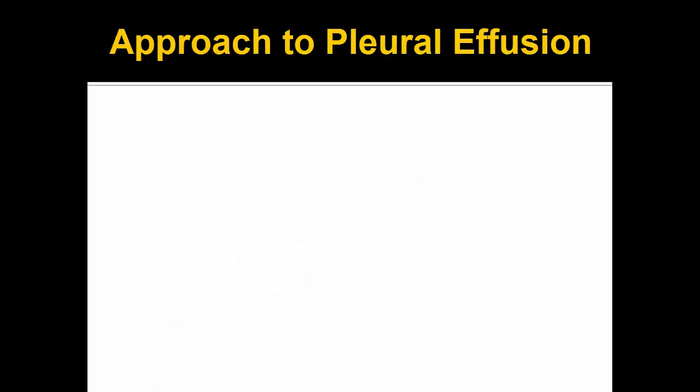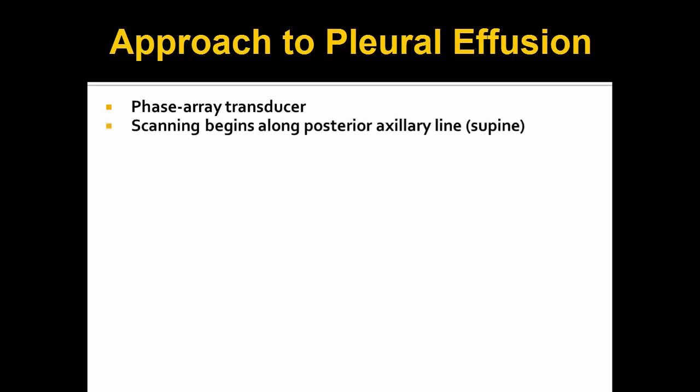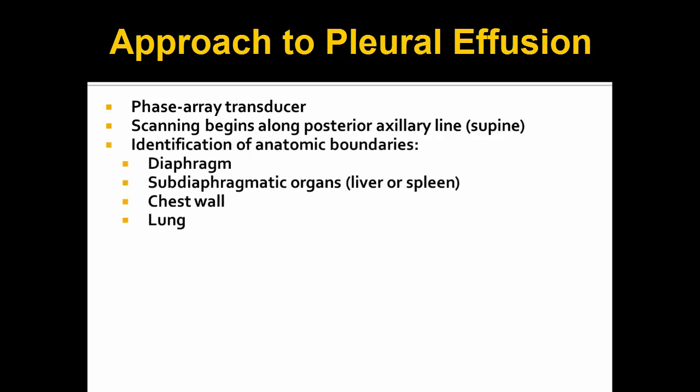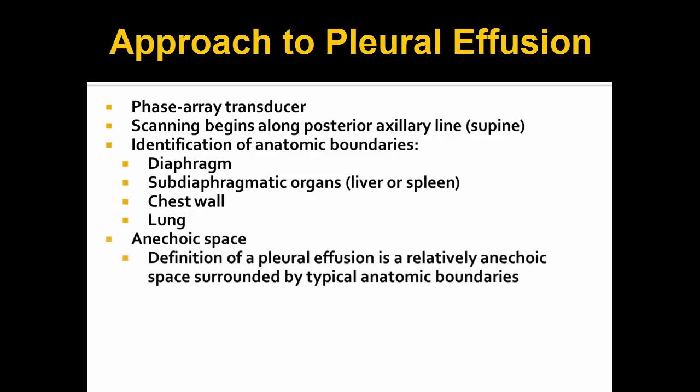Before we proceed to any video clips, we would like to arm you with the proper approach to the identification of pleural effusions as well as proper image interpretation. First and foremost, it's important to select the proper probe — the phased array probe — which is the same transducer you would use for all of your lung ultrasound studies. In the supine patient, scanning begins in the posterior axillary line, and essentially what you're trying to do is identify the following anatomic boundaries: the diaphragm, the sub-diaphragmatic organs (either the liver or the spleen), the chest wall, and the lung. Encompassed by these boundaries, you are looking for an anechoic space. The true definition of a pleural effusion is a relatively anechoic space surrounded by typical anatomic boundaries.